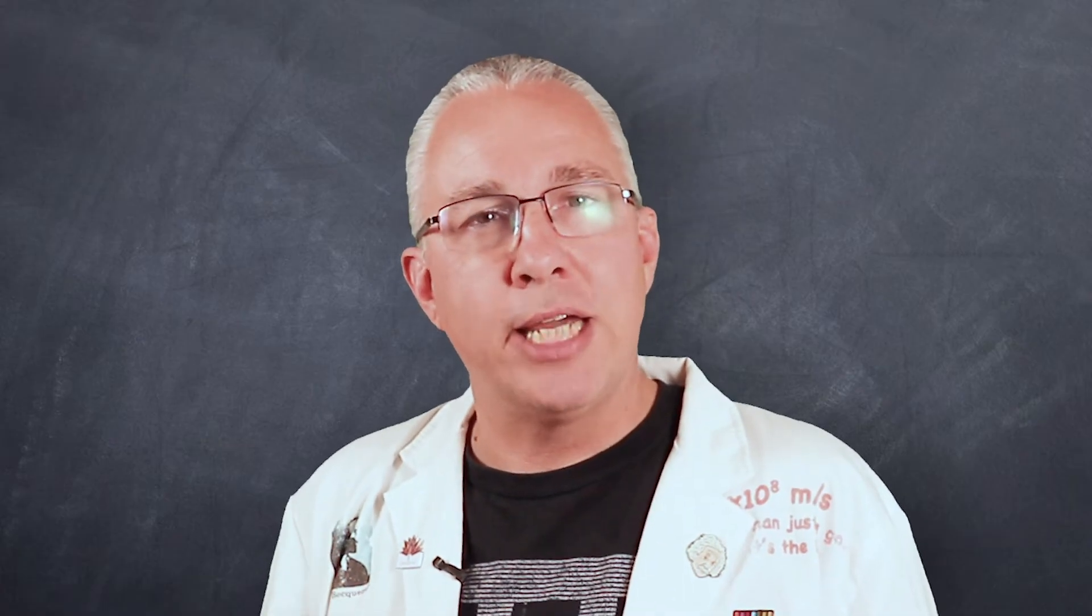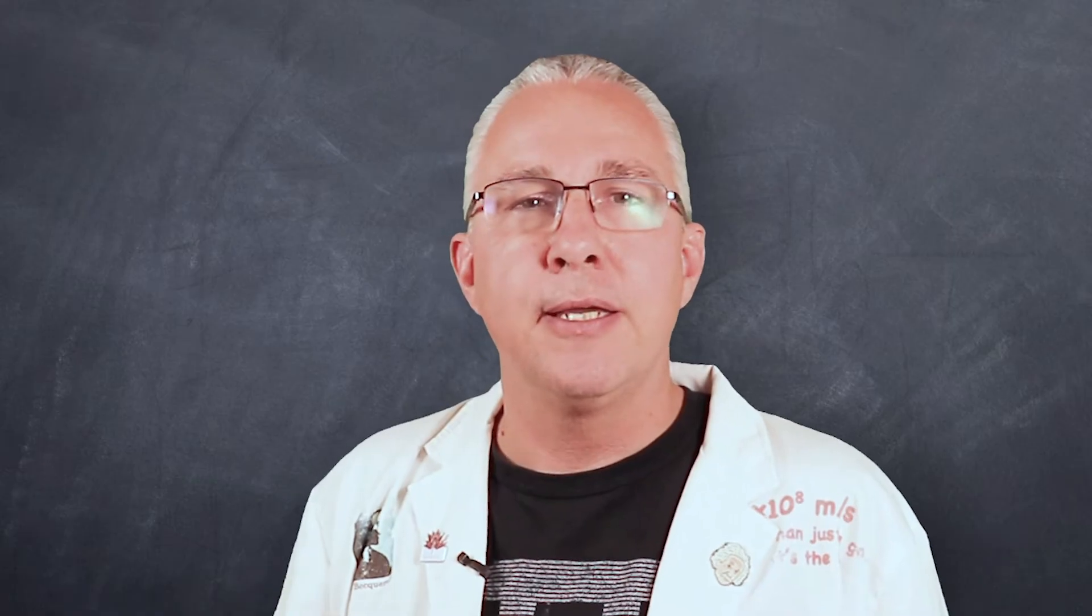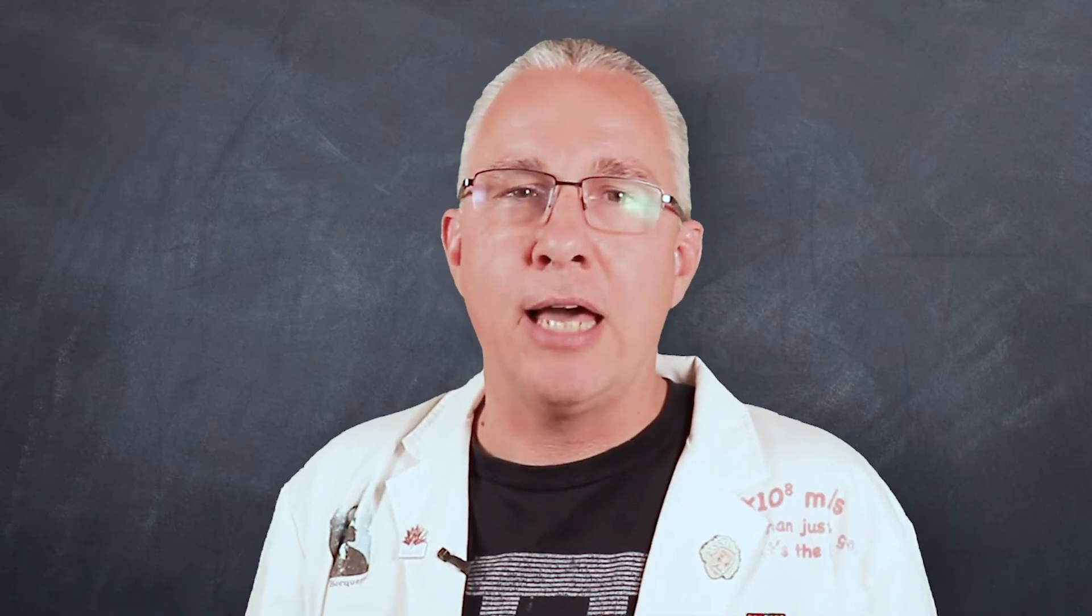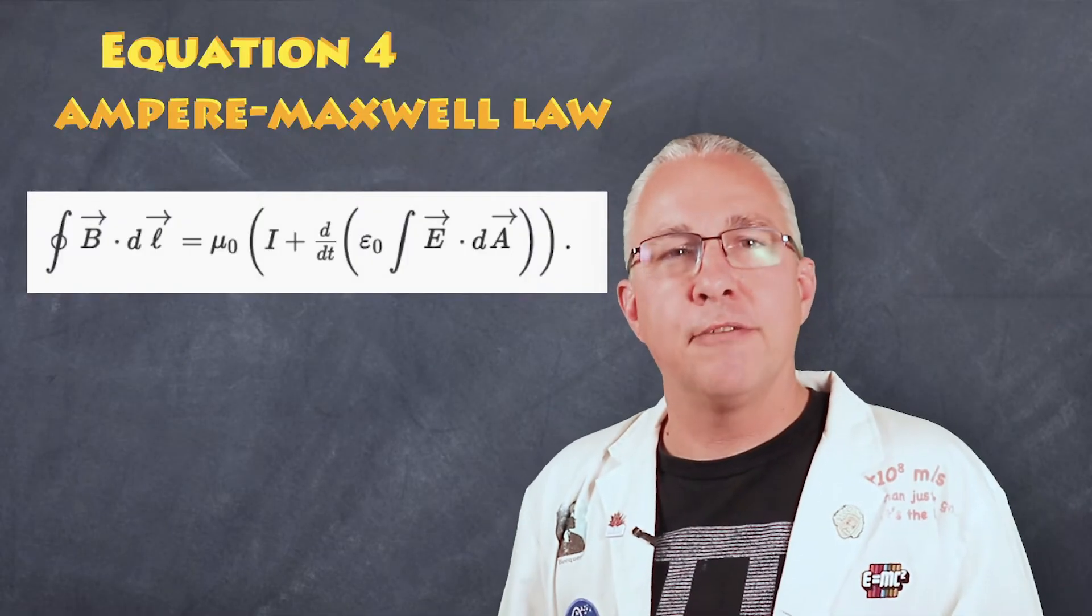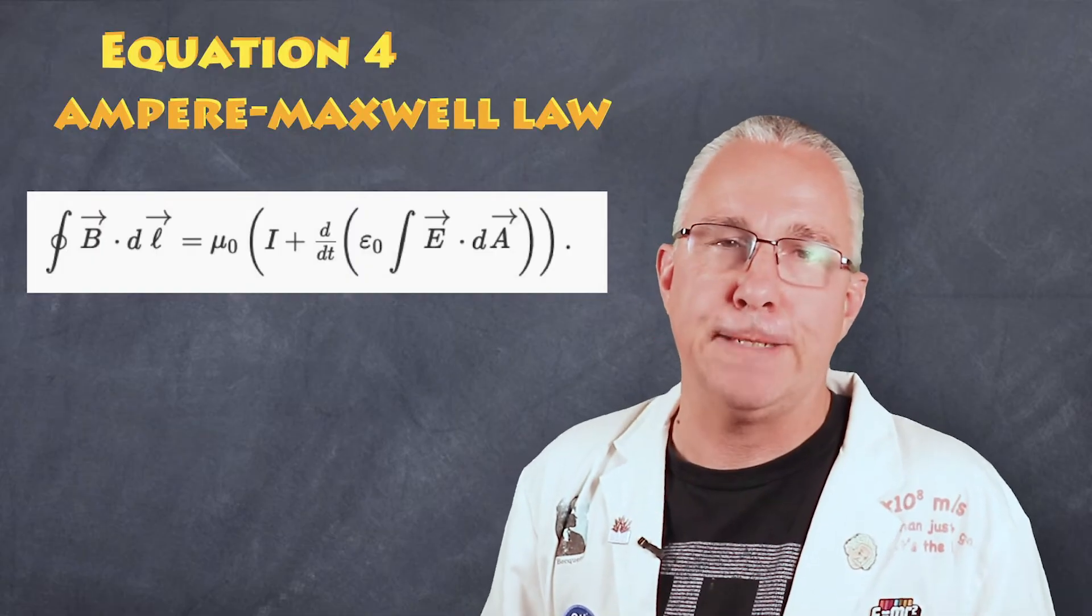But what if the current changes? When it does we know that a changing magnetic field will induce an EMF and thus a current. So Maxwell's genius was to tweak the formula to allow for this. In essence the fourth equation is Ampere's law with changing currents and fields considered.